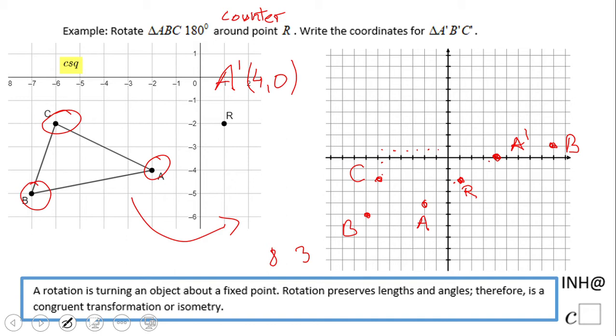This one is seven units from R. This is C prime. So we're going to connect these points and get our final triangle. Let's connect them, and you can see it is a rotation of 180 degrees.